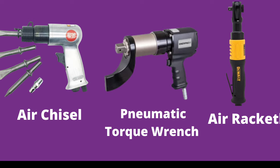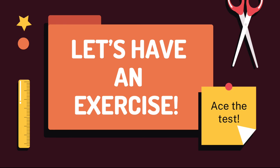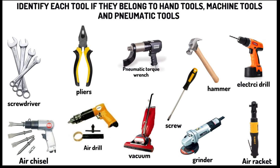These are the examples of pneumatic tools: air chisel, pneumatic torque wrench, and air racket. Now let's try to have a short exercise. You need to identify each tool if they belong to hand tools, machine tools, or pneumatic tools.